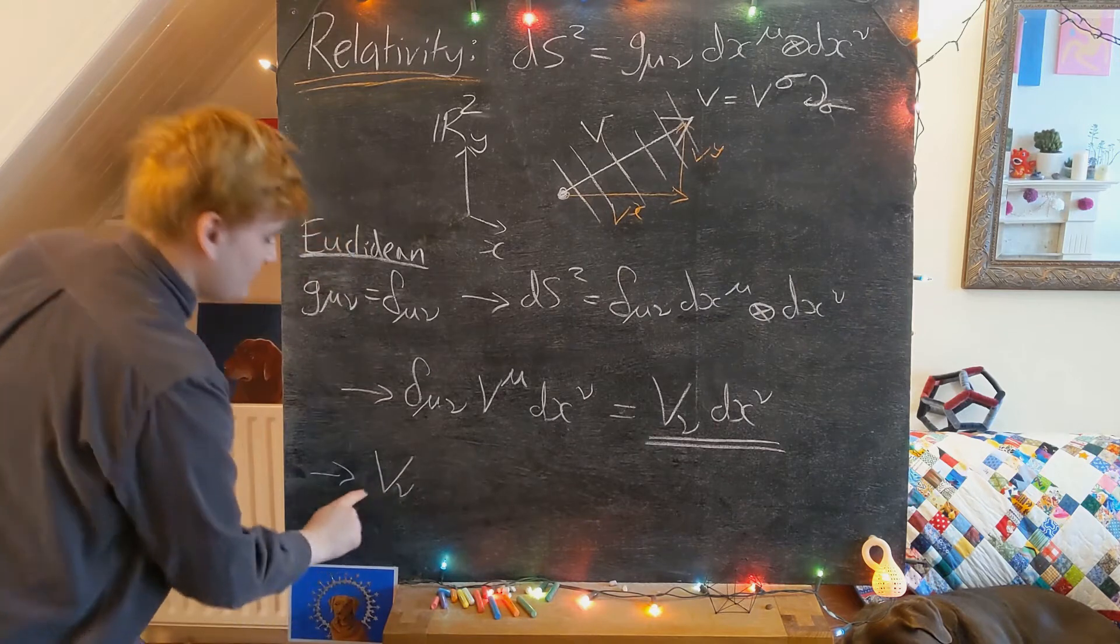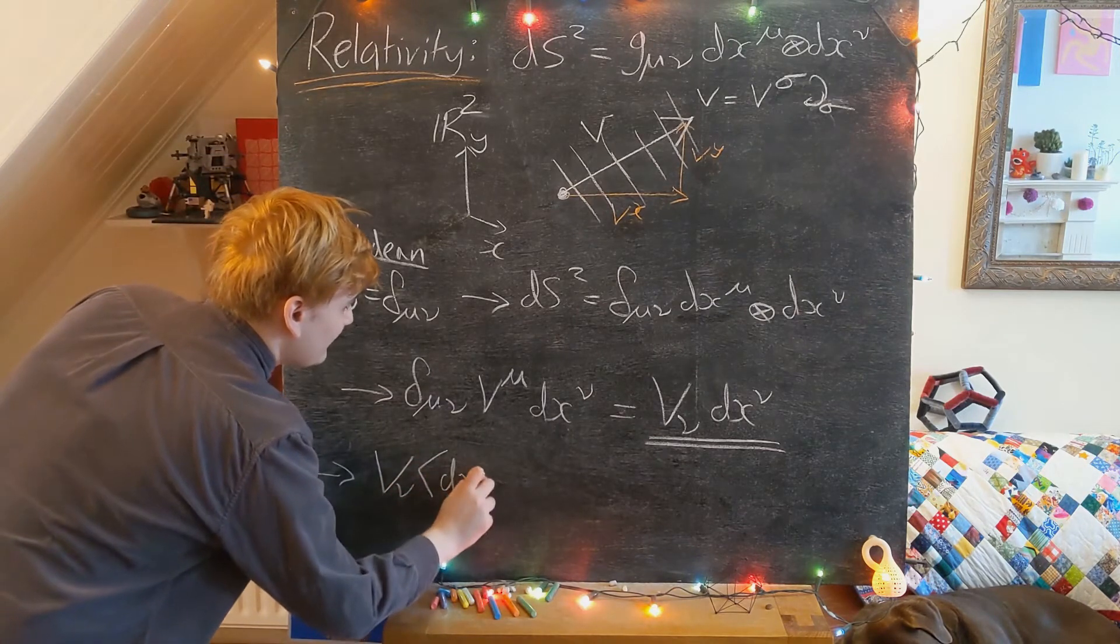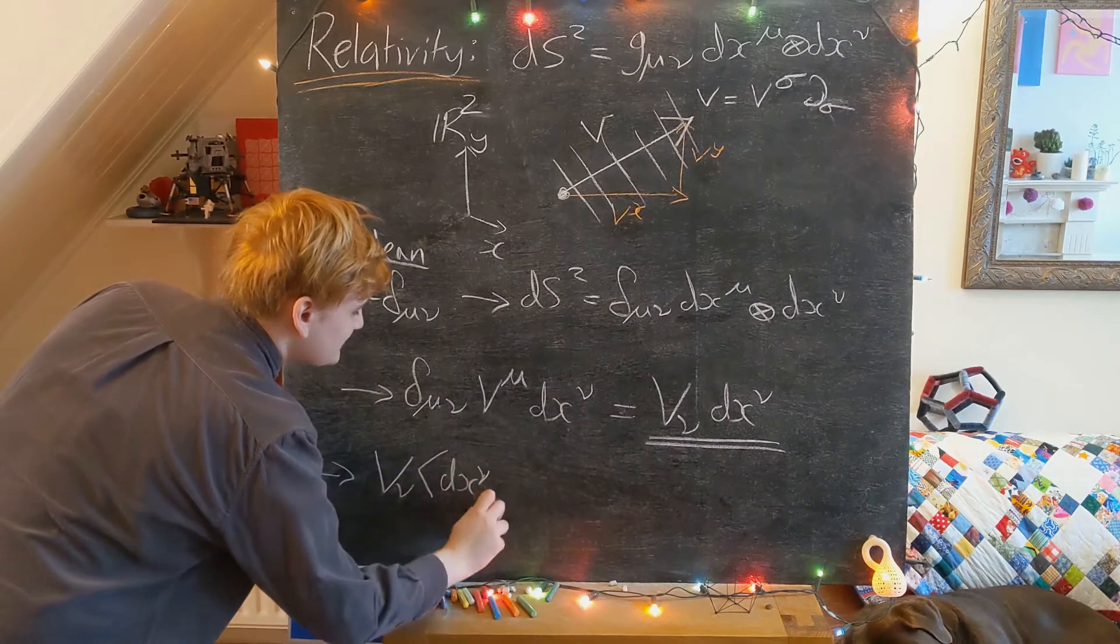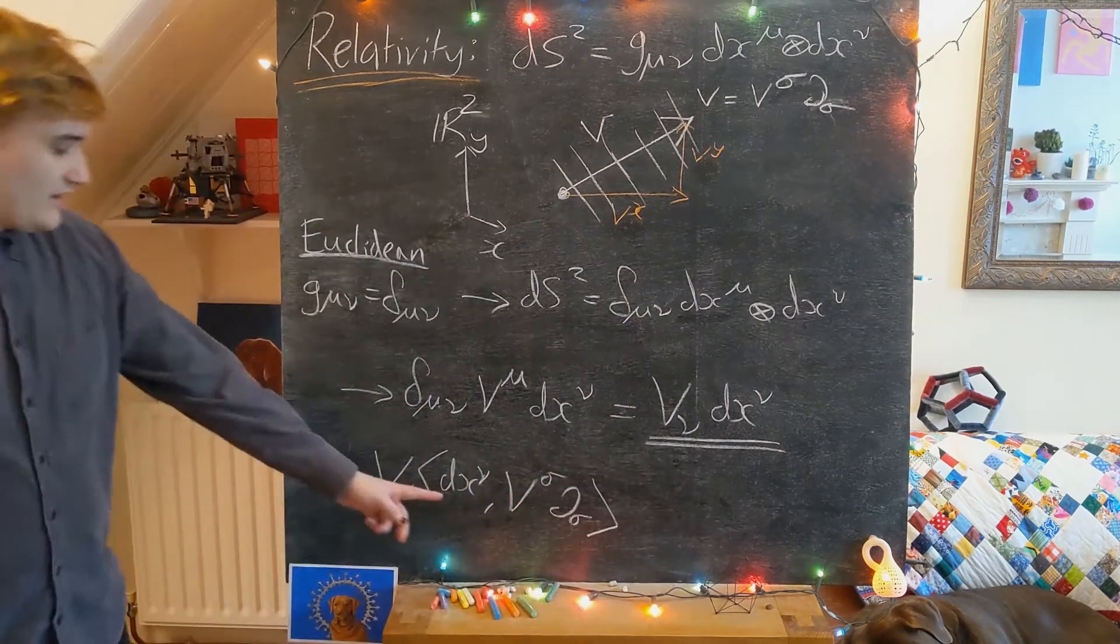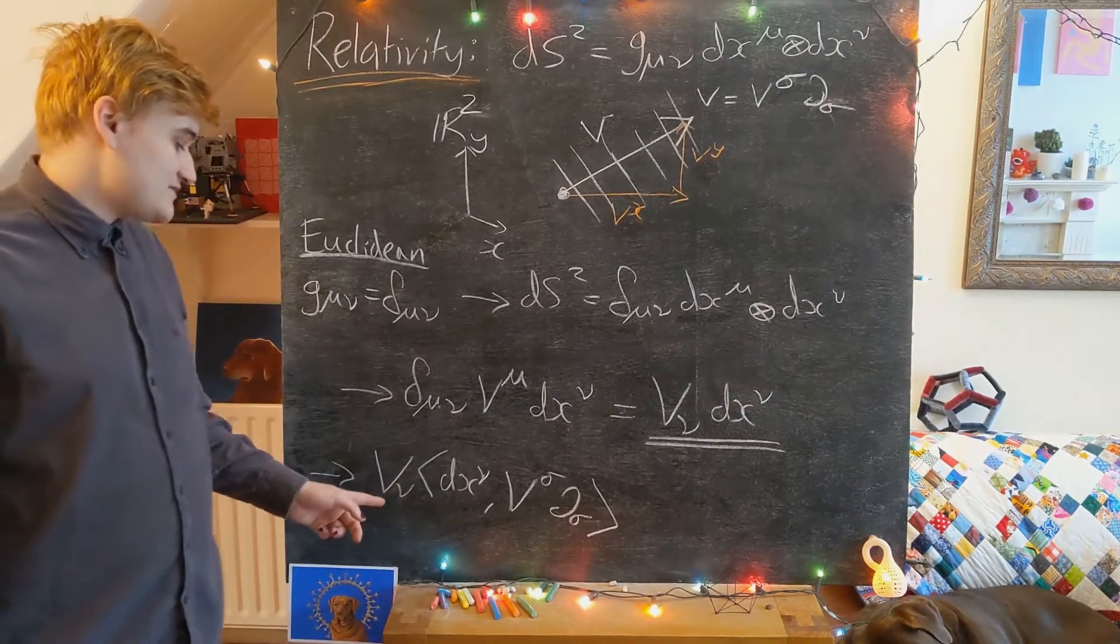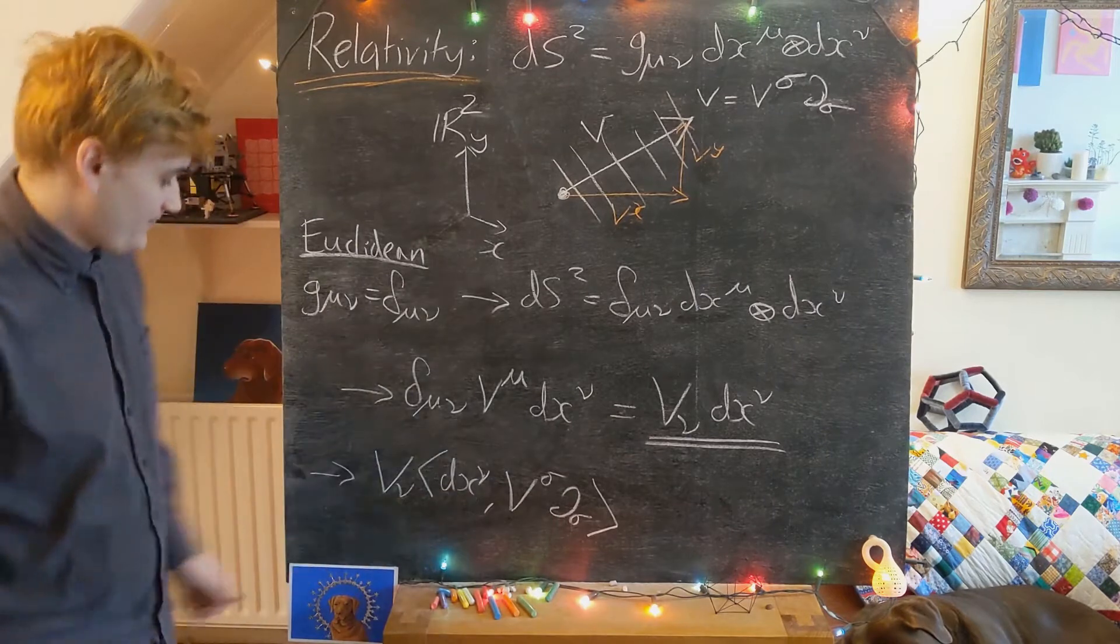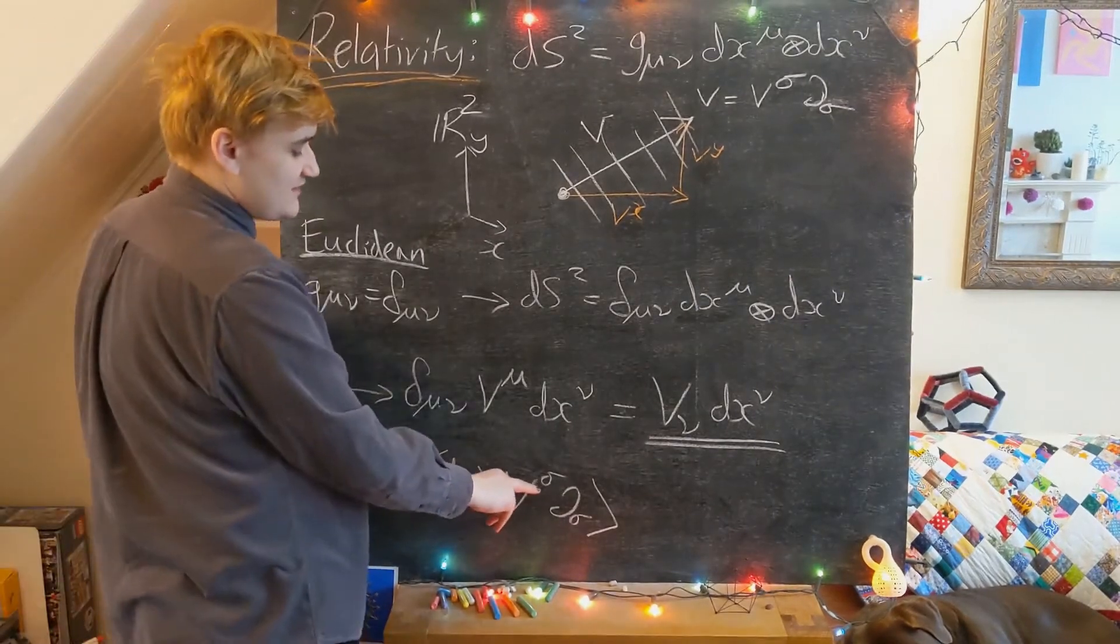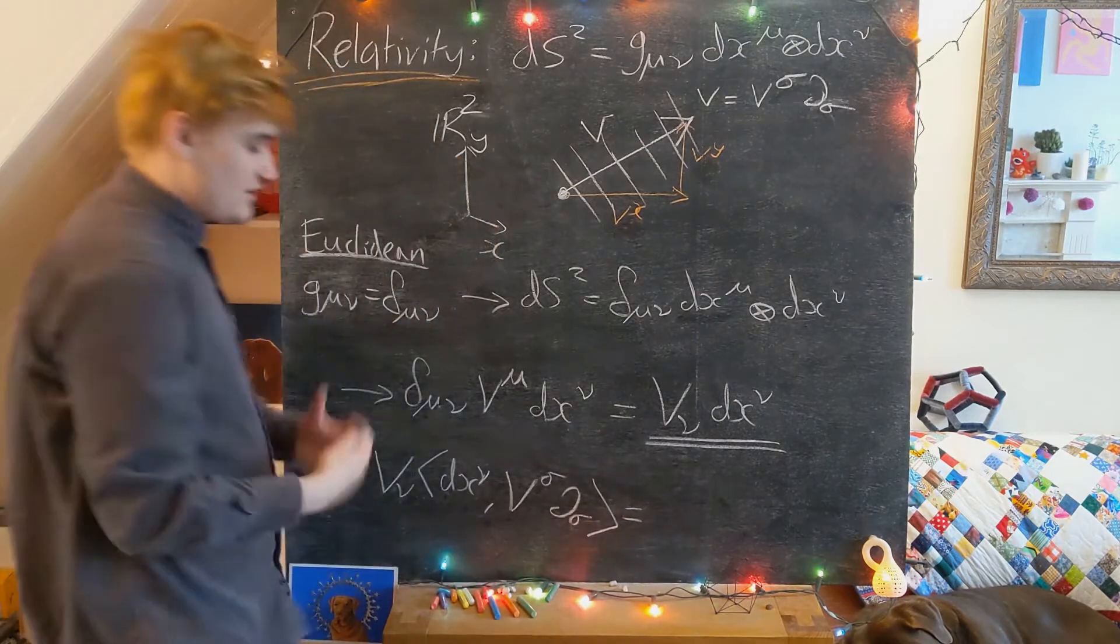We have the component V_ν out in front, then we plug in to dx^ν another copy of the vector. And now of course, pulling our component out again, we're just going to get a δ_νσ, which is going to effectively just turn that σ index into a ν.